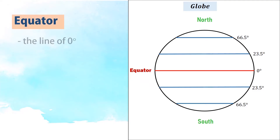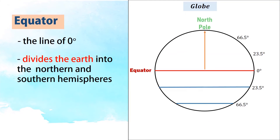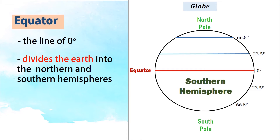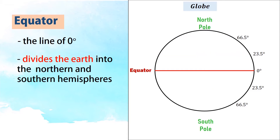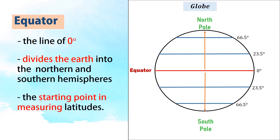The equator is the line of zero degrees that divides the Earth into the northern and southern hemispheres. Above the equator up to the north pole is the northern hemisphere, while below the equator down to the south pole is the southern hemisphere. The equator is the starting point for measuring latitudes.